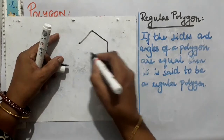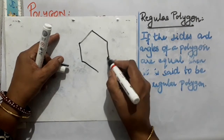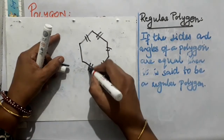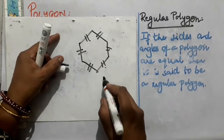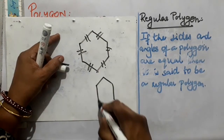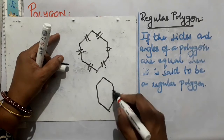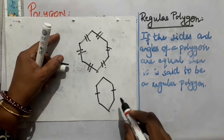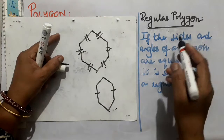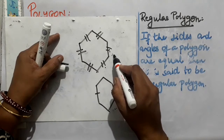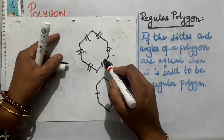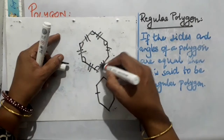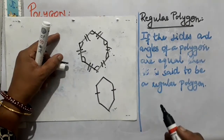If the sides and angles of a polygon are equal, then it is said to be a regular polygon. Say here you have a hexagon. If all 6 sides of the hexagon are equal, then we say it is a regular hexagon. If some sides are equal but not all, this is not a regular polygon. But if all 6 sides and all 6 angles are equal, this is a regular polygon.